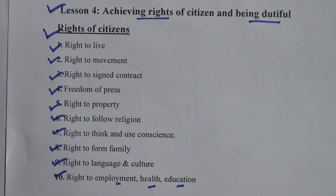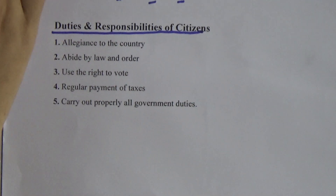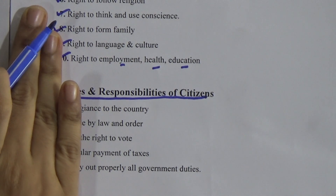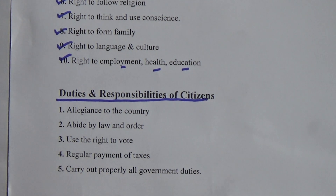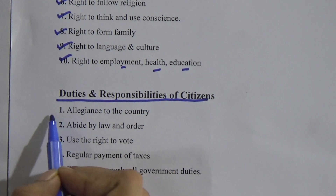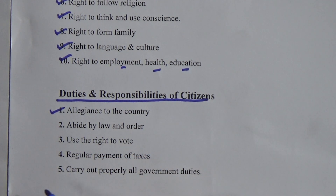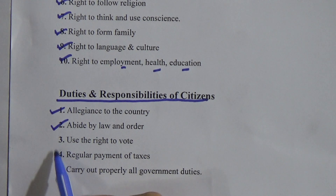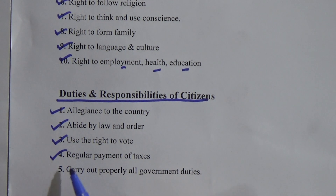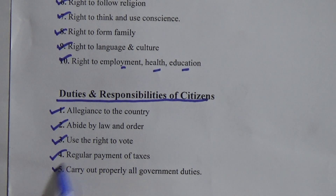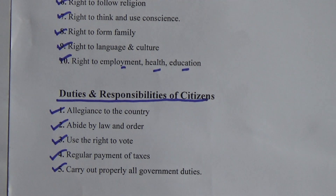We will also find the duties and responsibilities of citizens. Rights mean the government will let us do all these things, and duties mean we will do all things to be a good citizen for the betterment of the country. The duties include: allegiance to the country, abide by law and order, use the right to vote and elect the best representative for society, regular payment of taxes if eligible, and carry out properly all government duties to maintain all responsibilities for the betterment of our country.